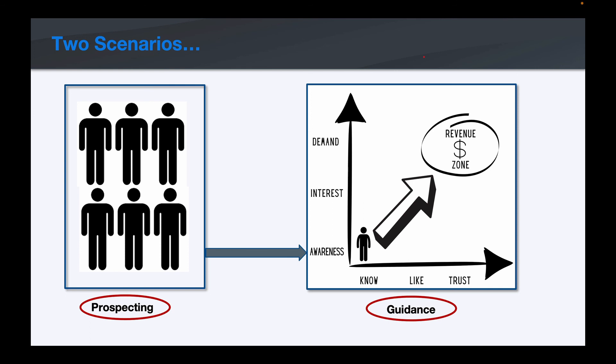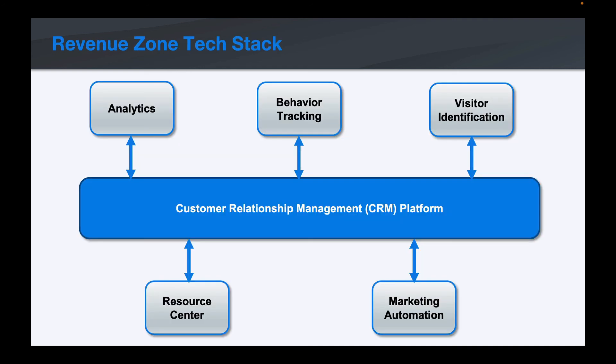These are the two scenarios where you can really take advantage of marketing automation: prospecting, which is moving somebody into your yellow brick road and revenue zone matrix, and guidance, which is guiding them from the lower left-hand corner into the upper right-hand corner and into the revenue zone. Hopefully this helped give you a better understanding of how marketing automation fits into the revenue zone tech stack. We'll see you on the next episode.